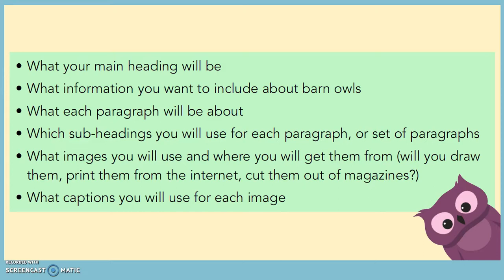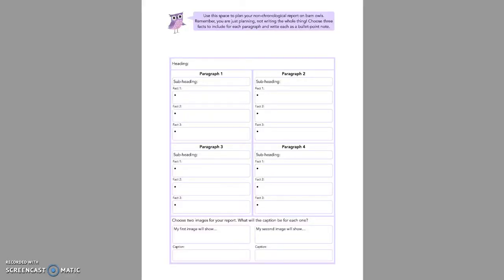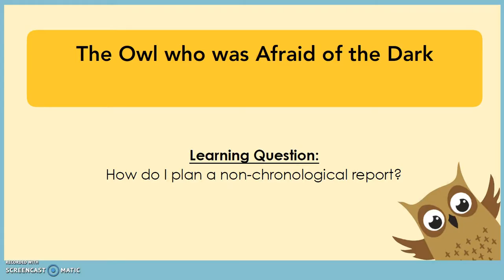Now we've looked at what you're going to be including, it's time to start planning your text. You can use the template on the website to guide you. Think about your main heading for the top box, and then you've got four different paragraphs to include. Think about what facts you're going to include — two or three facts will be perfect. Write them down as notes so you're not writing full sentences, and then give each a subheading to explain what that paragraph is about. Think about a couple of images you'd like to show, and create your caption to explain what these images mean, ready for when you're drafting your non-chronological report. Remember, if something new comes into your head, you can still use it even if it wasn't in your original research. Good luck, and I look forward to seeing the different things you've decided to include. Thank you.